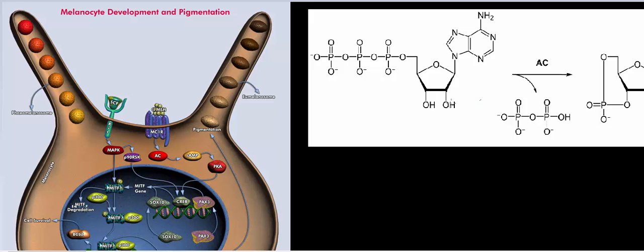What we're going to do is go over the function of a cell called the melanocyte. The melanocyte is a cell that is going to biosynthesize melanin. From a simplistic point of view, melanin is a polymer of different types of molecules that protects the underlying DNA and tissues from UV light from the sun.